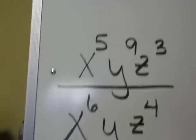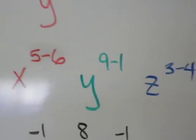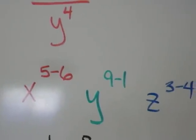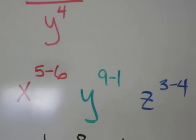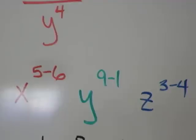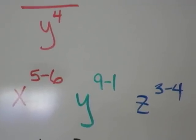So here we go with our subtraction. x to the 5th minus 6, y to the 9th minus 1, because of the invisible 1 in the denominator, and z to the 3 minus 4.